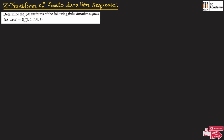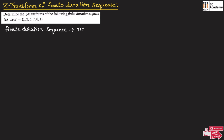We need to determine the Z-transform of the finite duration signal. Let us take the first problem where X1 of n is given as {1, 2, 5, 7, 0, 1}, where the arrow mark is at 1, which means this is the value of X1 of n at n=0. The values at n=1,2,3,4,5 follow respectively. So this finite duration sequence starts at n=0.